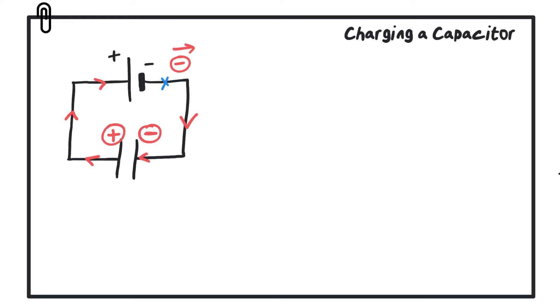Now this movement of electrons means that there is a current, and this charging current decreases while the capacitor is charging and eventually it stops whenever the potential difference across the capacitor is equal to the EMF of the battery.